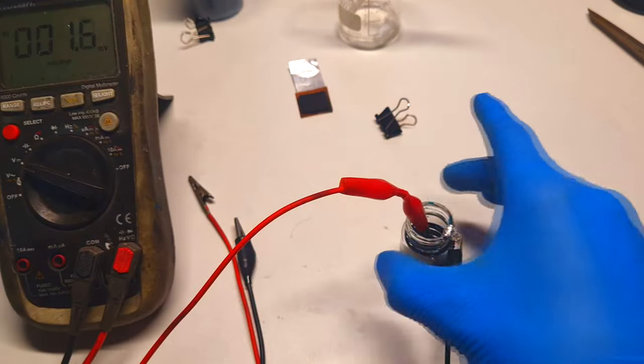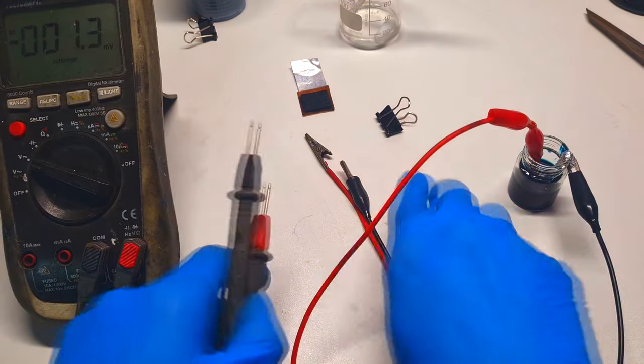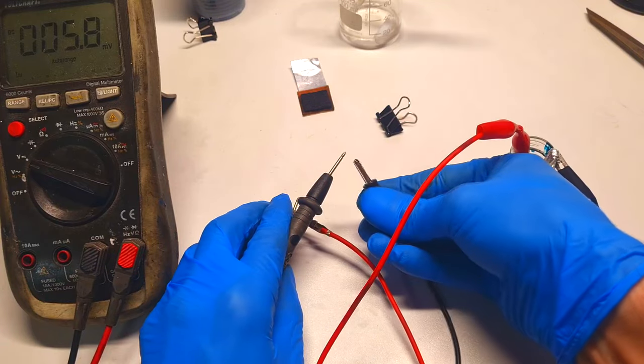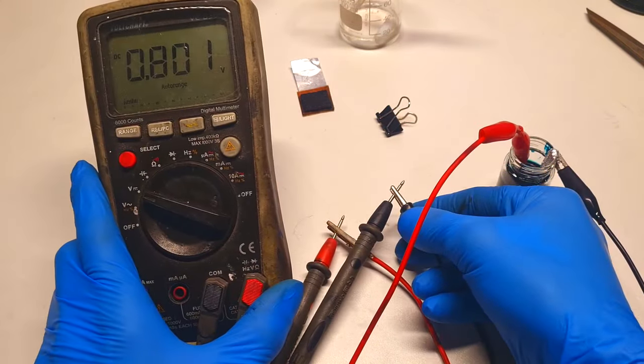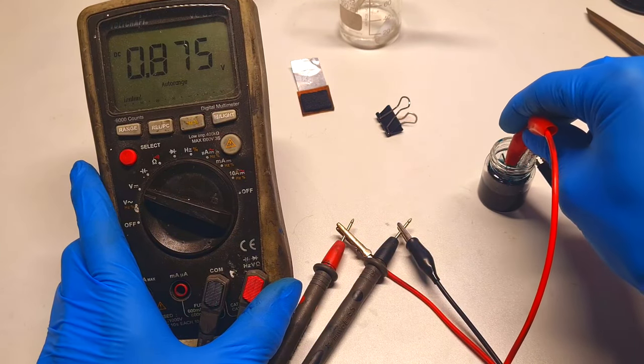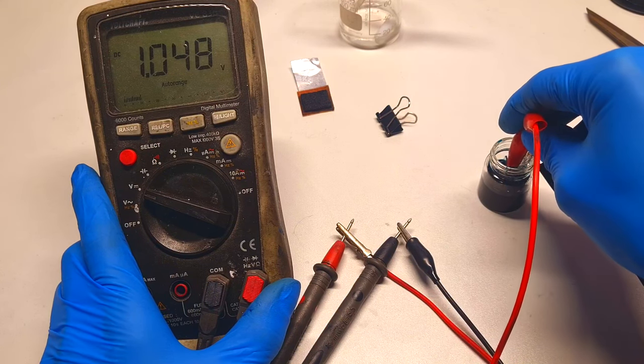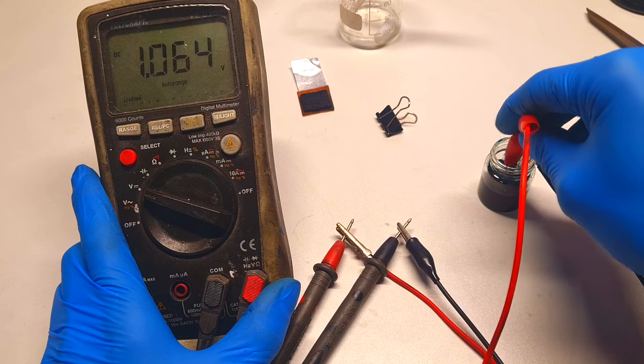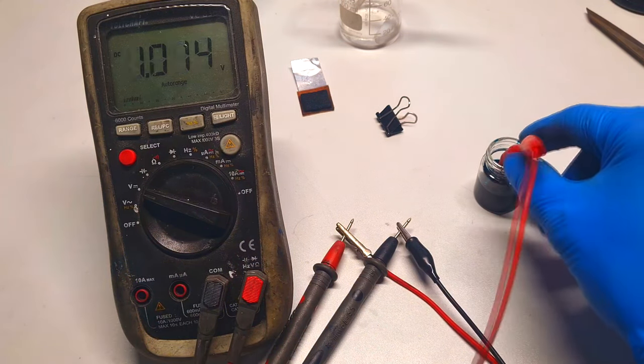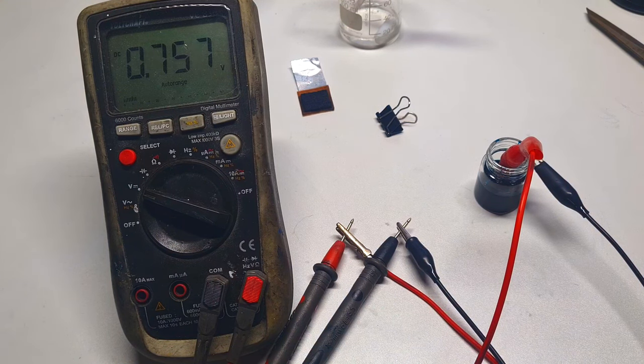Let's check if this simplified cell version will also work. First I will measure the voltage. So right now at this moment I get one volt, but I think that my crocodile clip is touching the electrolyte.